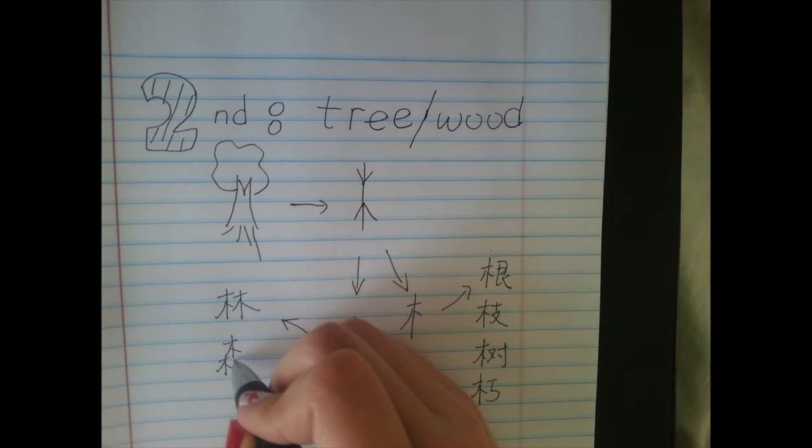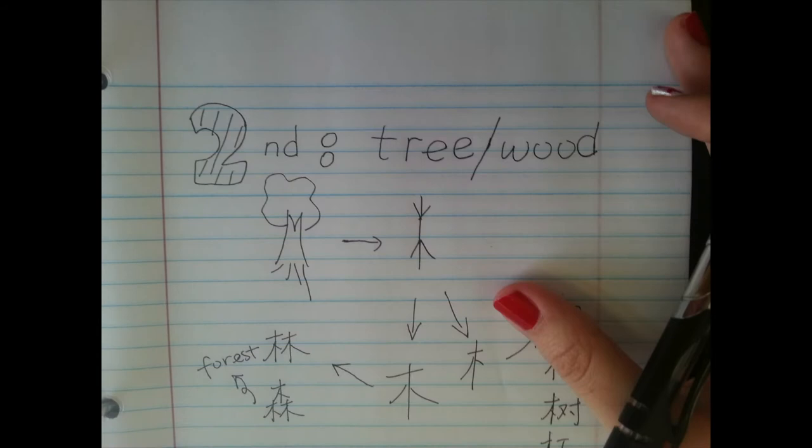And the interesting part is: if you put trees together — like two or three trees together — it becomes the character for forest. It makes sense, right? A lot of trees in a forest!